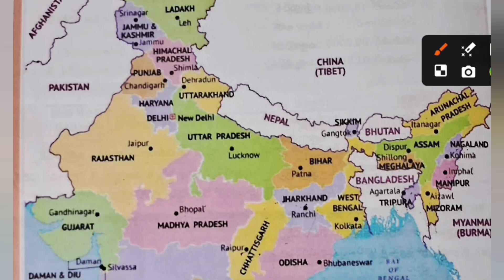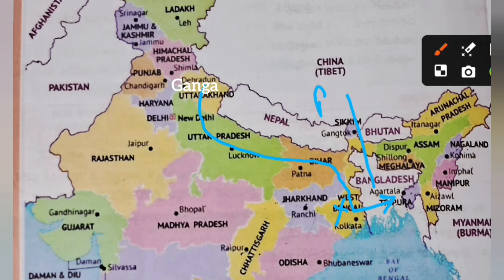The Ganga river flows through five states: Uttarakhand, Uttar Pradesh, Bihar, Jharkhand, and West Bengal. After West Bengal it enters Bangladesh, where this river is called Padma. Finally it flows into the Bay of Bengal.